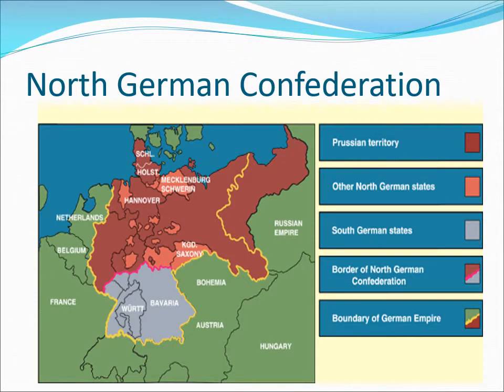Under Bismarck, Prussia created the North German Confederation — all those states north of the Main River, about 20 German states with an enlarged Prussia as the most important member. Politically, Bismarck's Confederation had a constitution and a parliament, but the real power went to the king, the prime minister, and the army. These two victorious wars — the Danish War and the Seven Weeks War — gave Bismarck most of the liberal support, as he gave them what they wanted: a unified Germany.